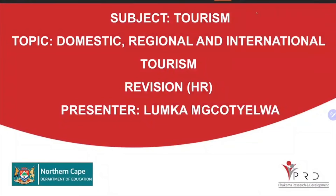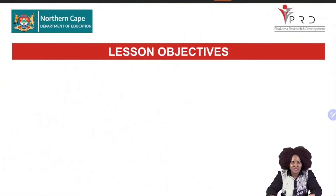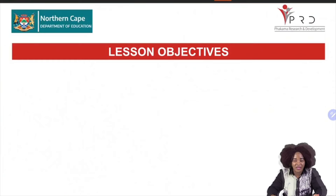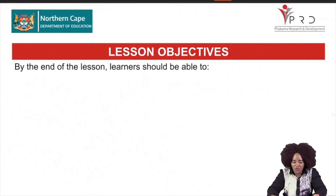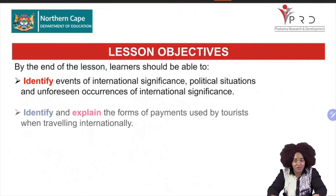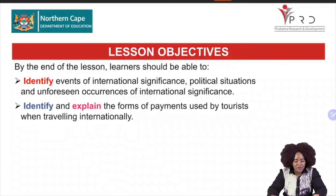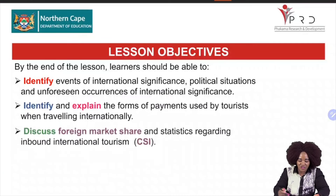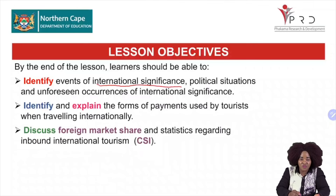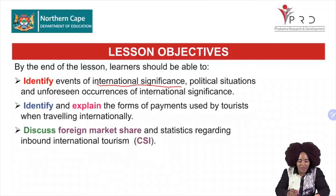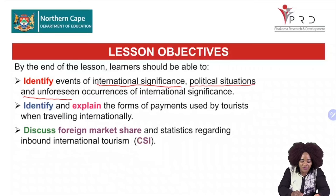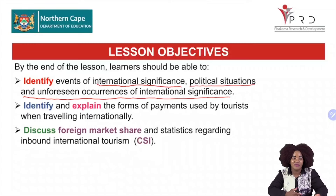Let's see what you are going to learn under this topic today. We always start with our lesson objectives — what are the things that you need to achieve at the end of this lesson? You must be able to identify events of international significance, because you are going to be asked about global events of international significance, and also the political situation and unforeseen occurrences of international significance.